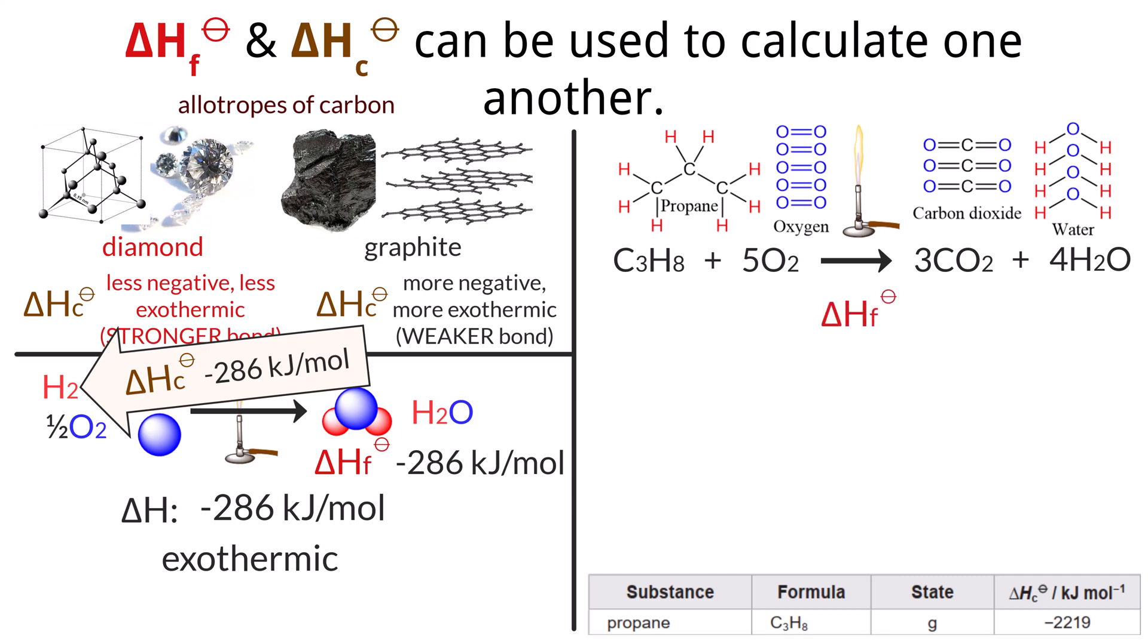The enthalpy of formation data is: delta H sub F of C3H8 is negative 105 kilojoules per mole, delta H sub F of O2 is 0 kilojoules per mole since it's an element in its standard state, delta H sub F of CO2 is negative 394 kilojoules per mole, and delta H sub F of H2O is negative 286 kilojoules per mole.